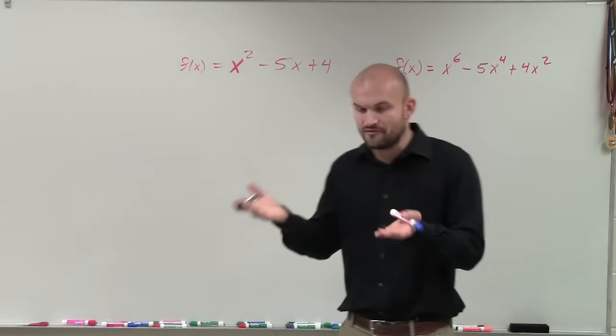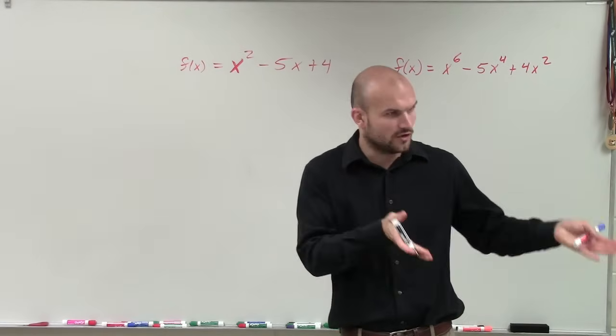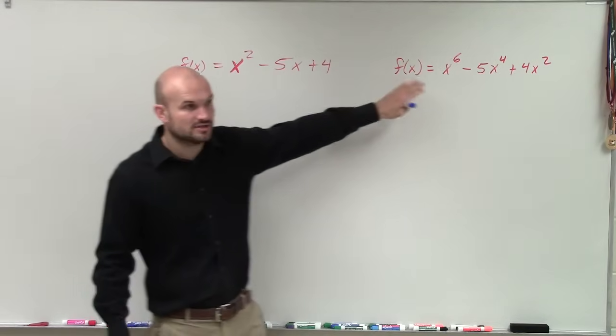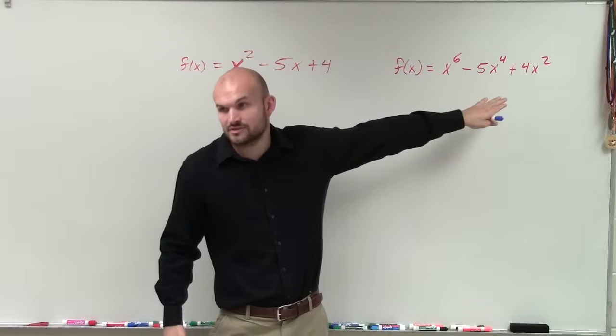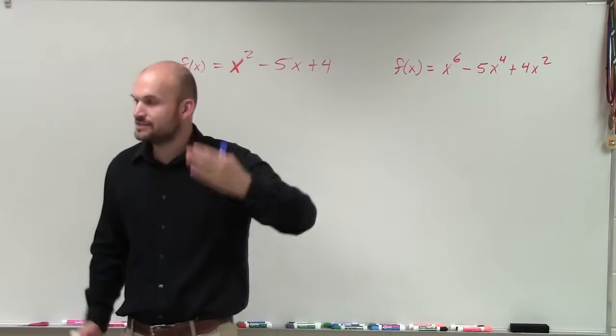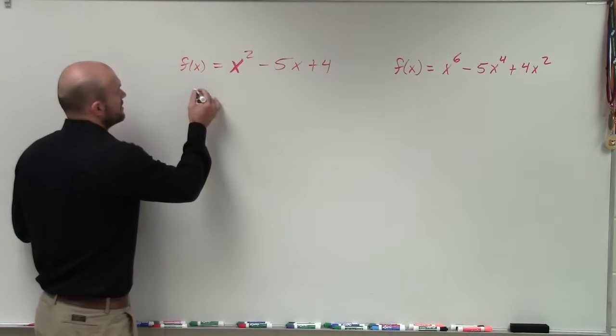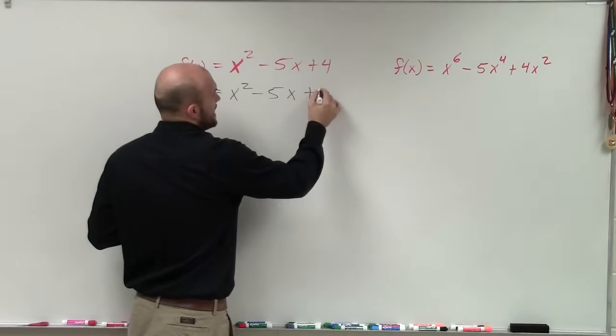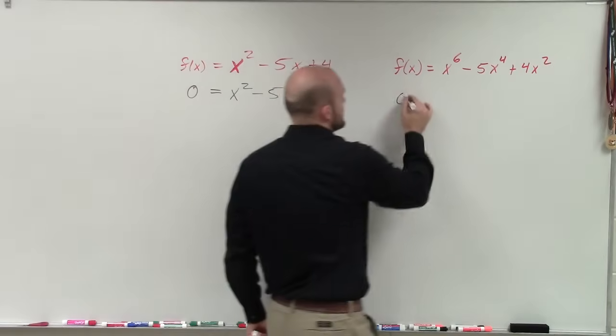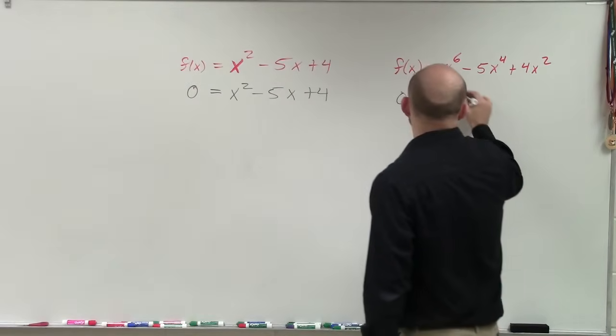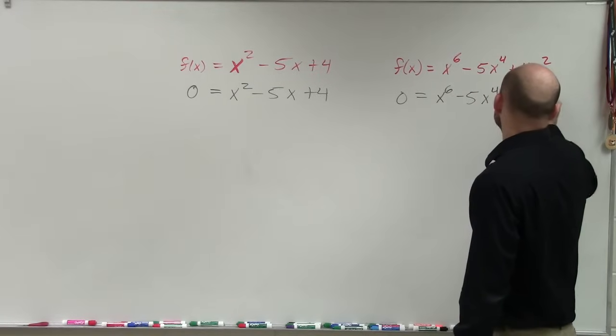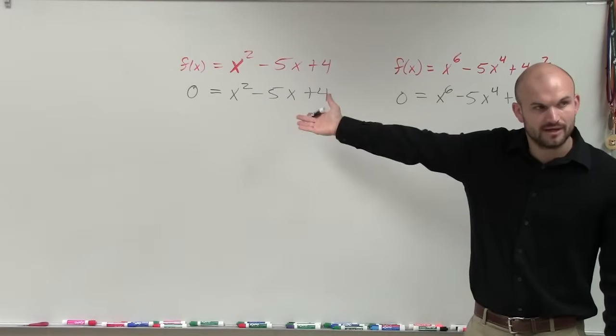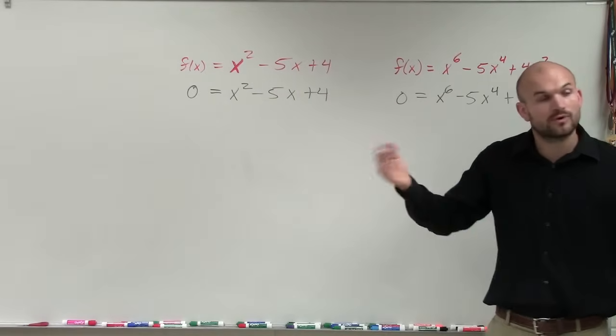So in algebra two, you guys factored and you learned how to solve when an equation was set equal to zero. Now we're talking about functions. And just here's a function, so now it's just set up as f of x equals here's your function, your polynomial. And when I say find the zeros, all I'm telling you to do is set it equal to zero. Tell me the solutions that make that equation true. Because the solutions that make that equation true are what we call the zeros. But don't be confused just by the name of zeros. The zeros are where the graph crosses the x-axis. Those are your x-intercepts or where the graph touches it.